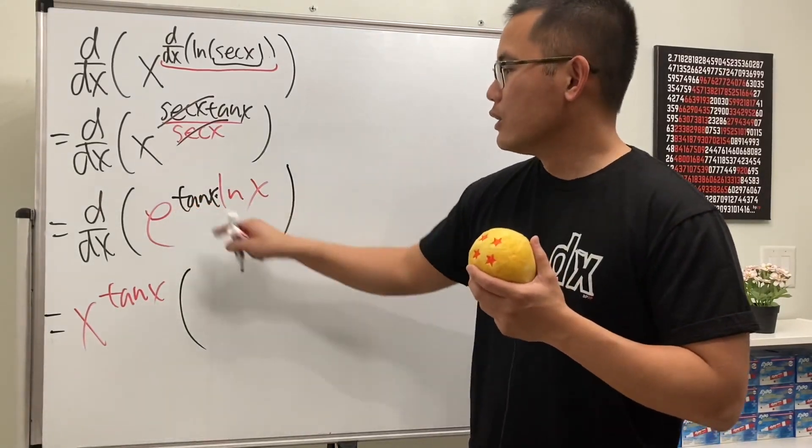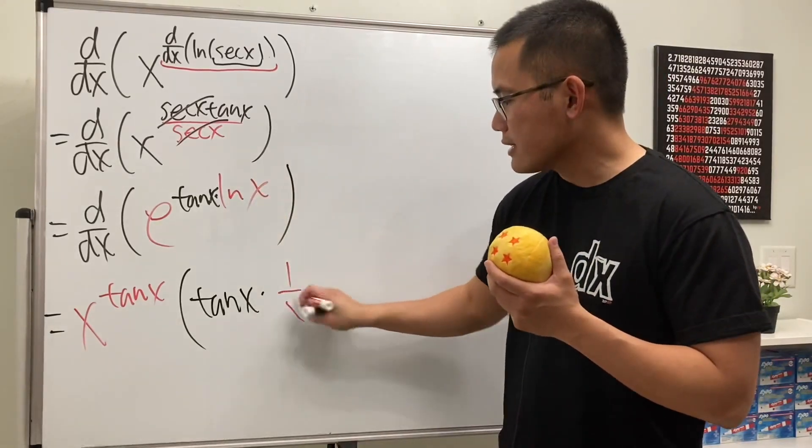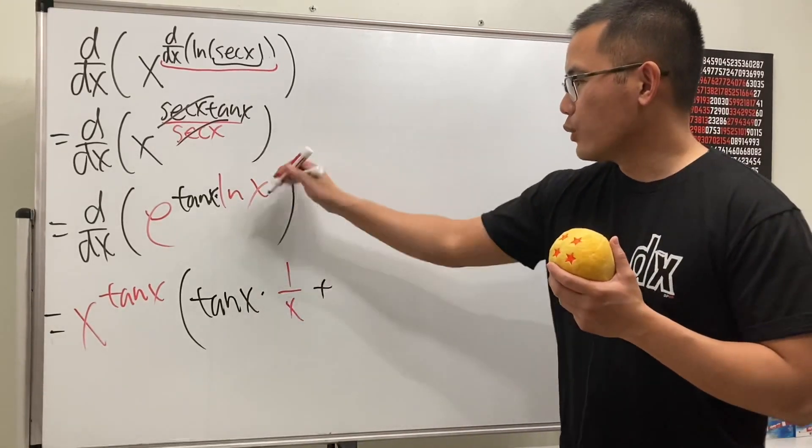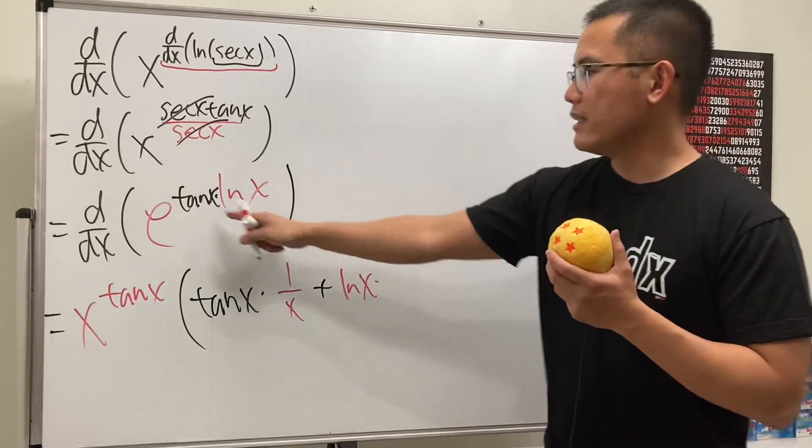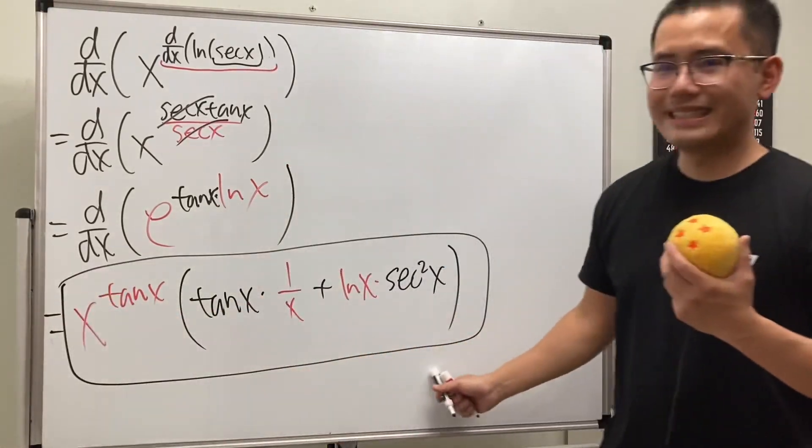So we have to keep the first function, which is going to be tangent x, and we multiply by the derivative of x, which is 1 over x. And then we add the second function, which is ln x, and we multiply by the derivative of the first, which is secant squared x. And then, this right here is it. That's it.